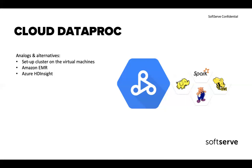Analogs and alternatives: you can set up a cluster on virtual machines. You can also use Amazon EMR, which is the AWS analog, and Azure HDInsight. The pricing strategy for Dataproc is that you pay only for each used instance with some extra payment. GCP bills for each minute when the cluster is running. I will show you this in the demo.